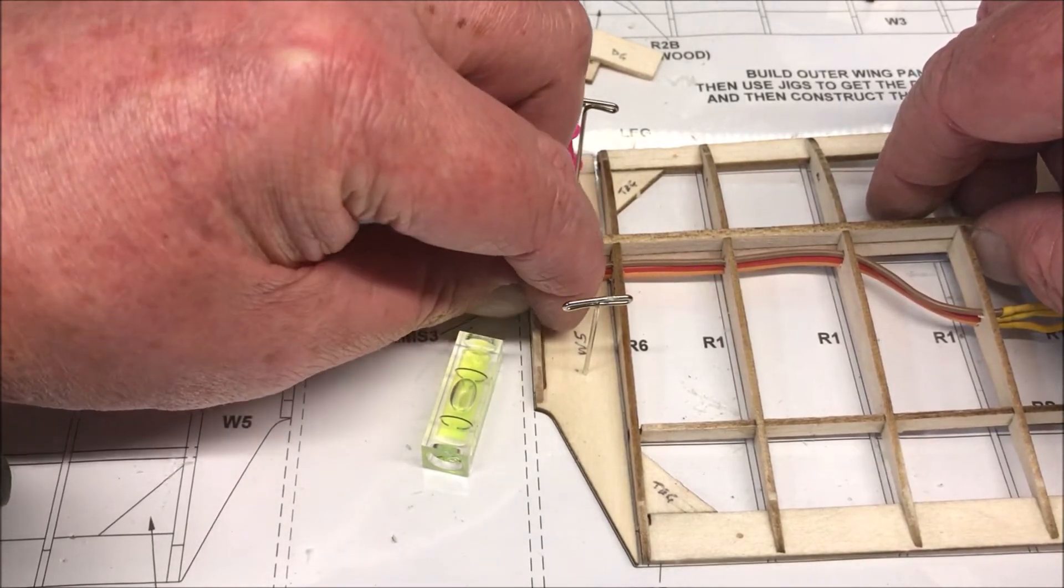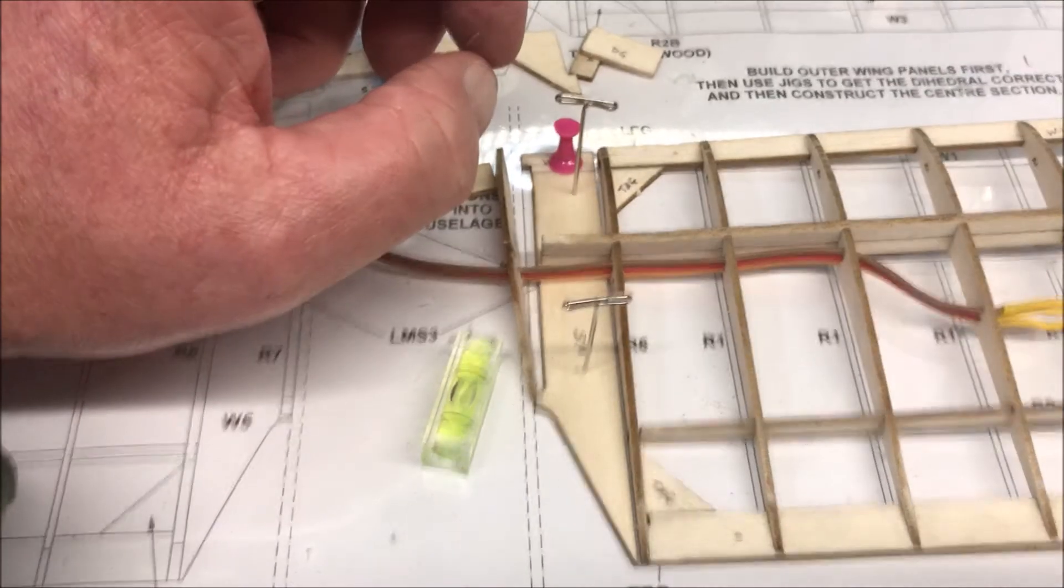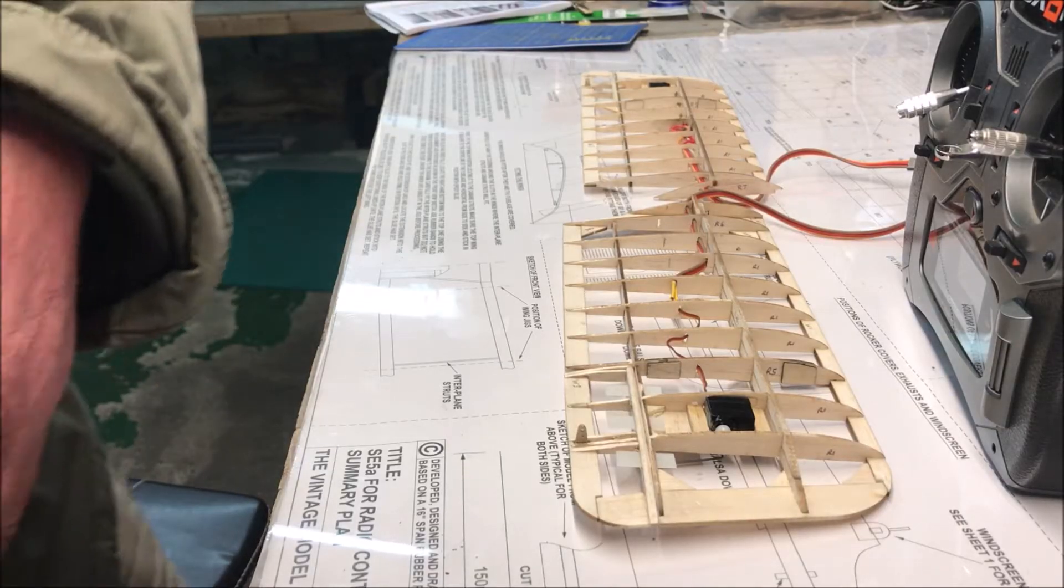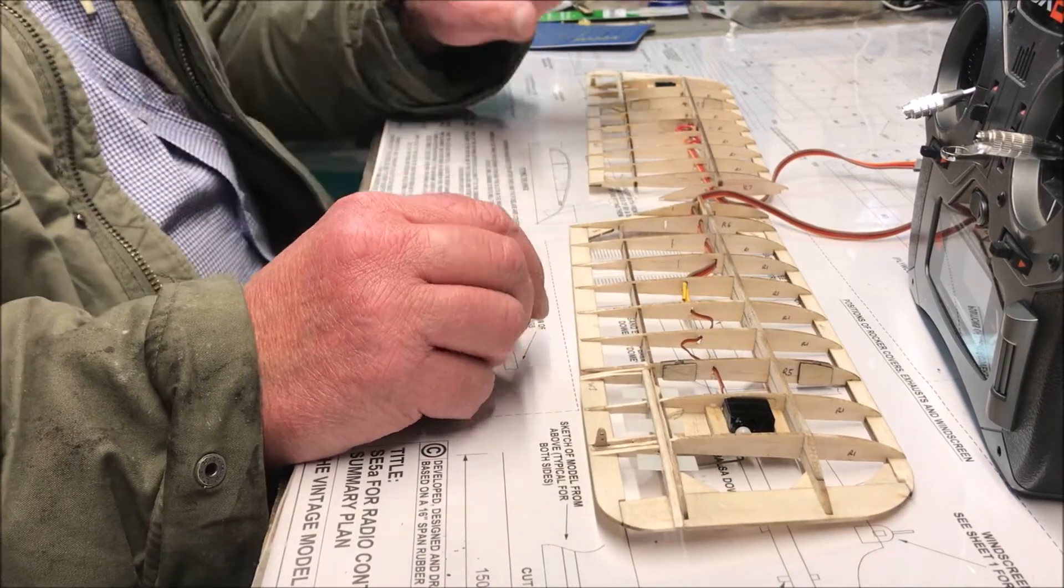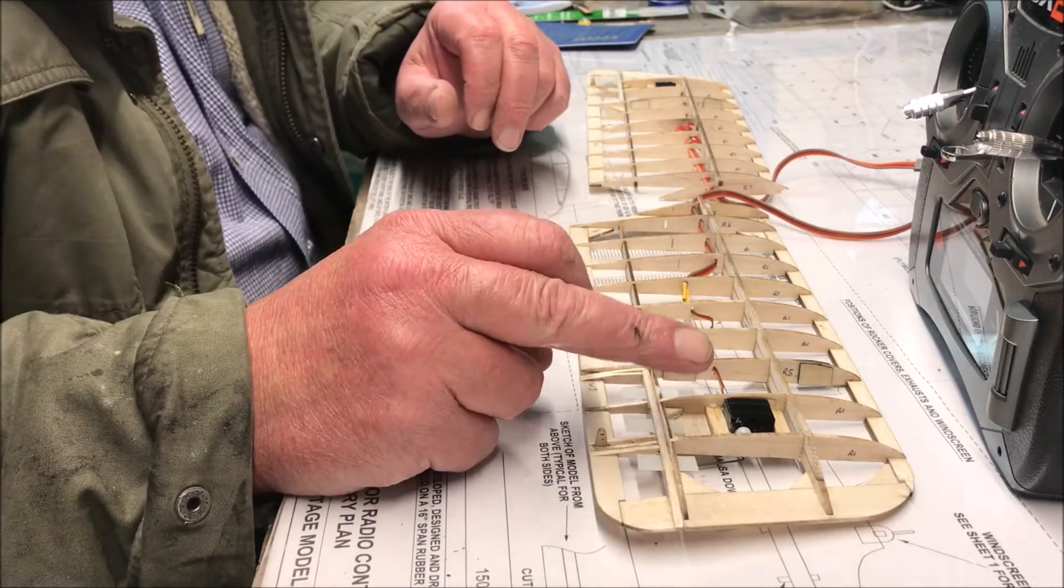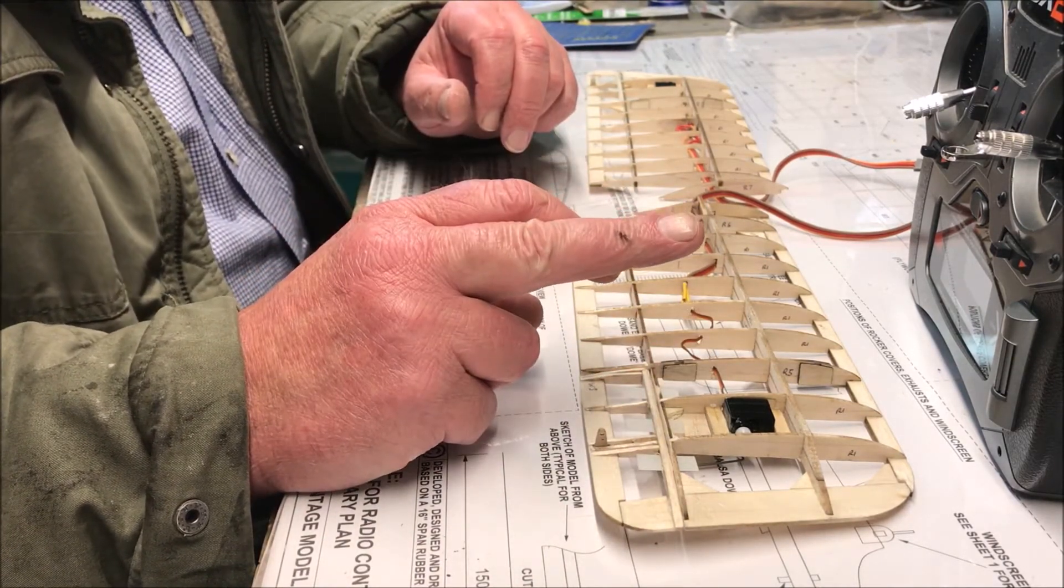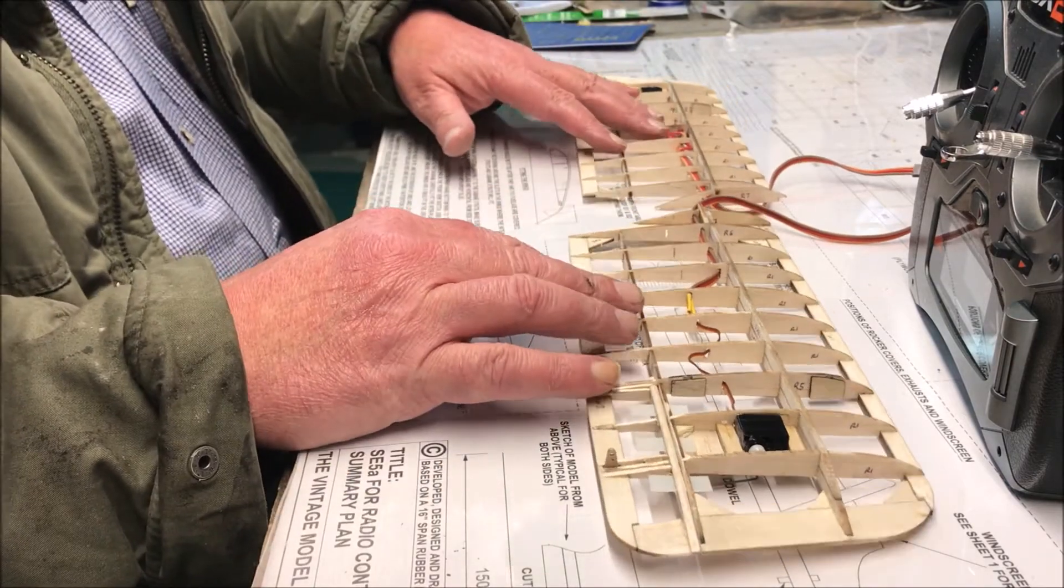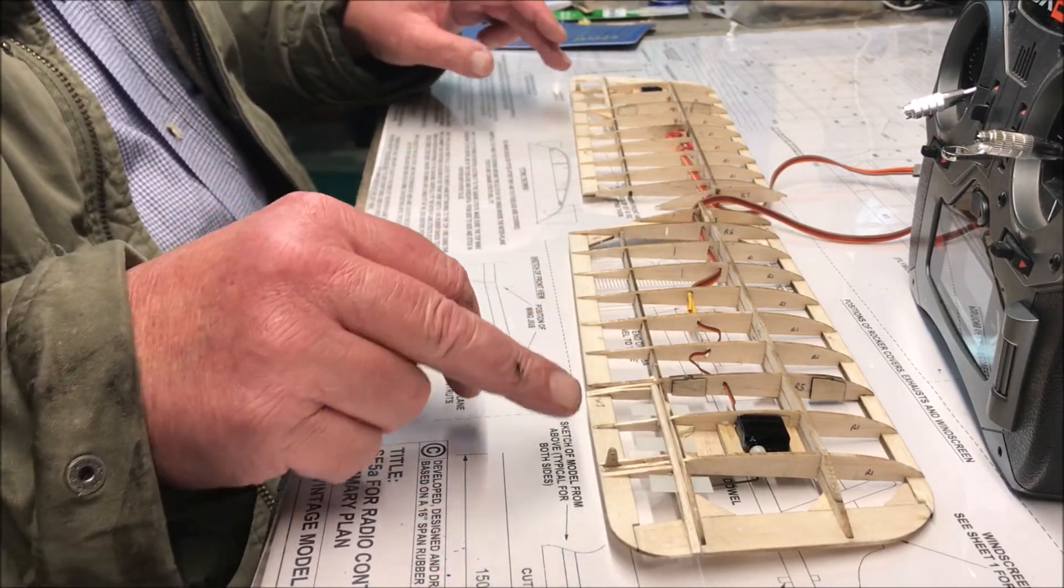Now then, I've done the starboard wing or the bottom wings. The servos are in, the radio's on, let's see if the ailerons work. Now this one points out, I've not glued these in okay, so they're going to pop out when they move. But let's see if they work.